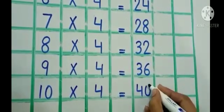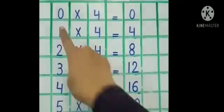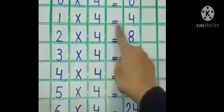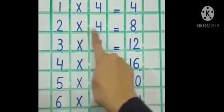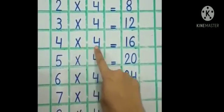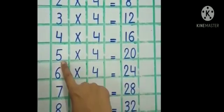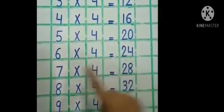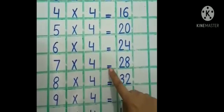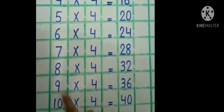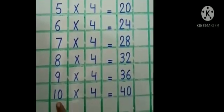Okay students, now read. 0 times 4 is 0, 1 times 4 is 4, 2 times 4 is 8, 3 times 4 is 12, 4 times 4 is 16, 5 times 4 is 20, 6 times 4 is 24, 7 times 4 is 28, 8 times 4 is 32, 9 times 4 is 36, 10 times 4 is 40. I hope you understood.